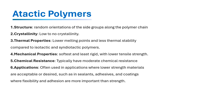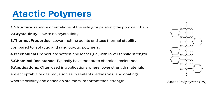Atactic polymers have random orientation of side groups along the polymer chain backbone, resulting in an amorphous structure with no regular order. Due to their very irregular structure, atactic polymers do not form crystals and are amorphous in nature. They do not show a melting point or have very low melting points. Atactic polymers are soft and tacky with low strength and stiffness.